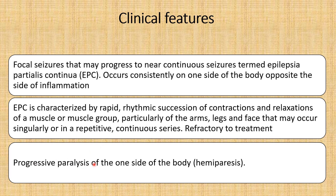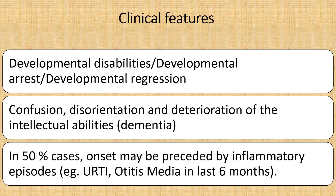The patient will have progressive paralysis of one side of the body — hemiparesis. Patients with Rasmussen's encephalitis also have delayed development due to regression or developmental arrest. The patient will have confusion, disorientation, and deterioration of intellectual ability. Dementia will be present, and in 50% of cases the onset is preceded by an inflammatory episode such as upper respiratory infection or otitis media in the last six months.